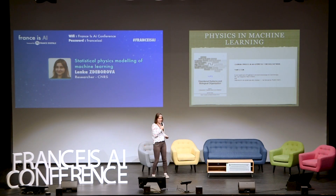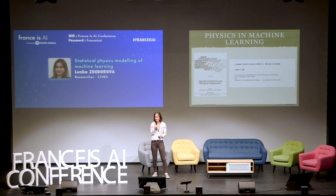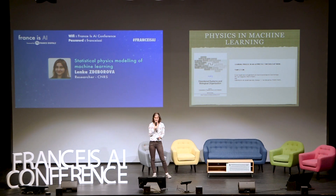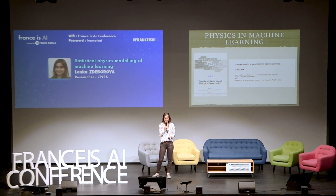Recently I heard Yann LeCun saying that during one of the neural network winters, some of the few places where he could go and freely discuss the fun things he was thinking about back then in 1985 about neural networks was actually in the physics community. This is one of the summer schools that was running in Les Houches called Disordered Systems and Biological Organization, and this snapshot is LeCun's paper in that conference proceeding.